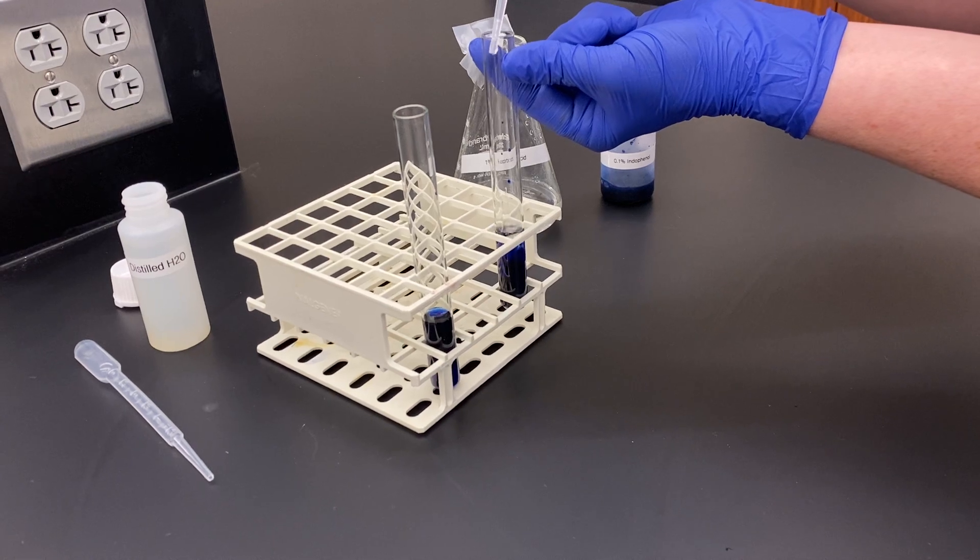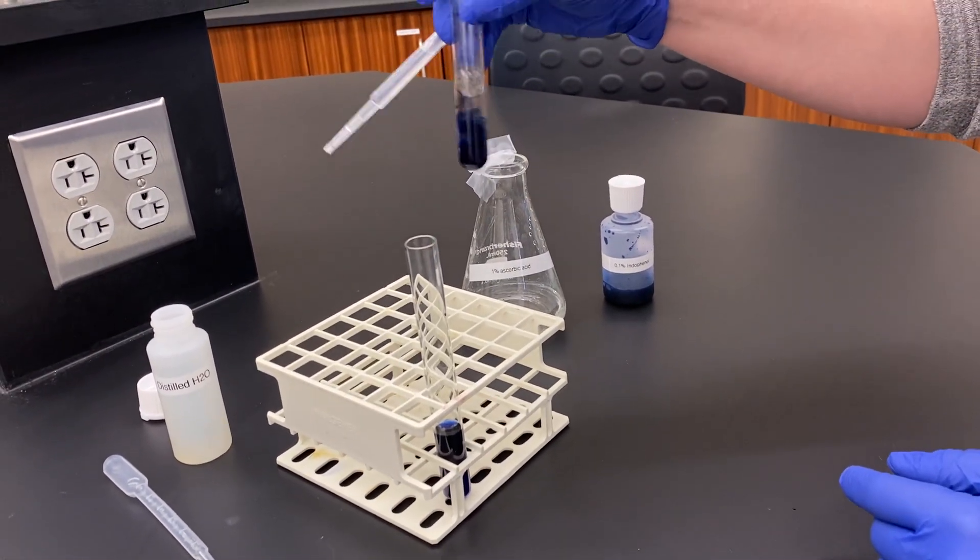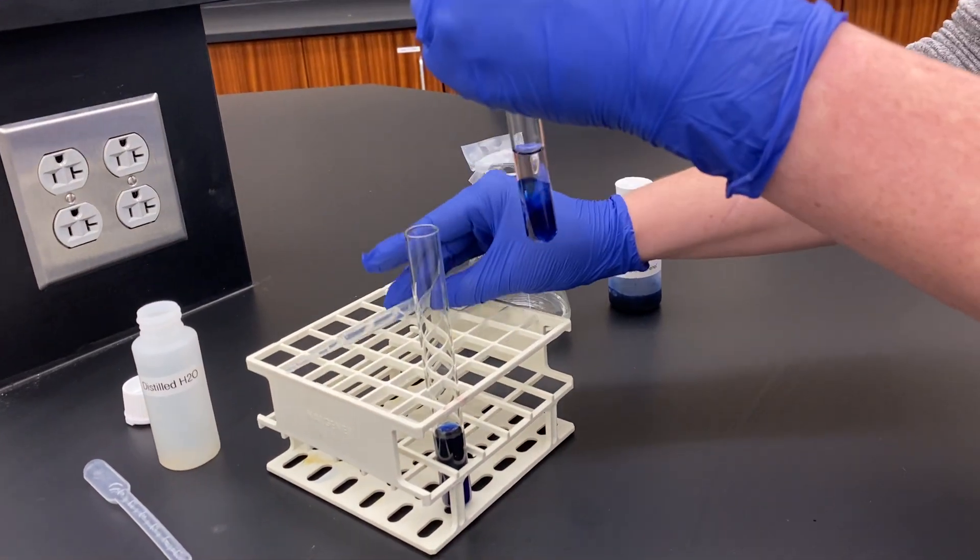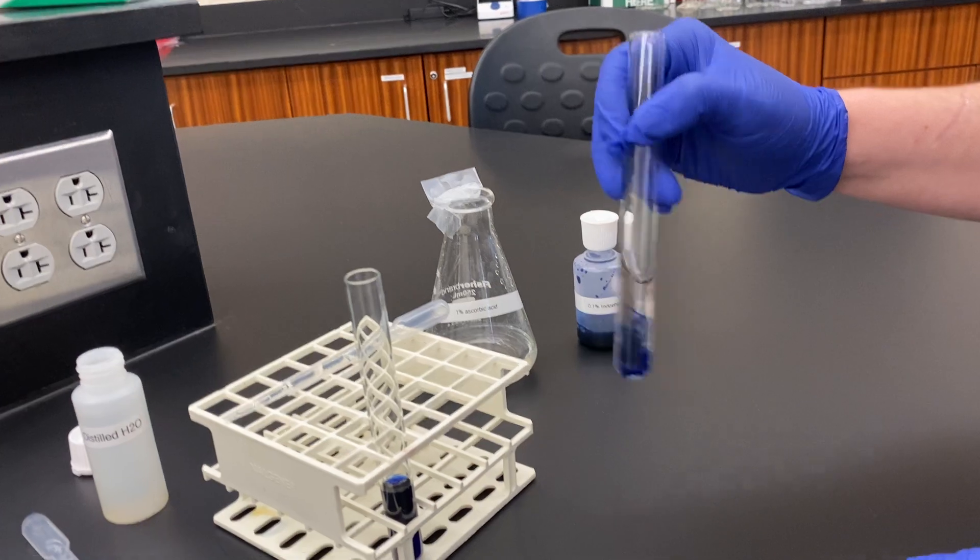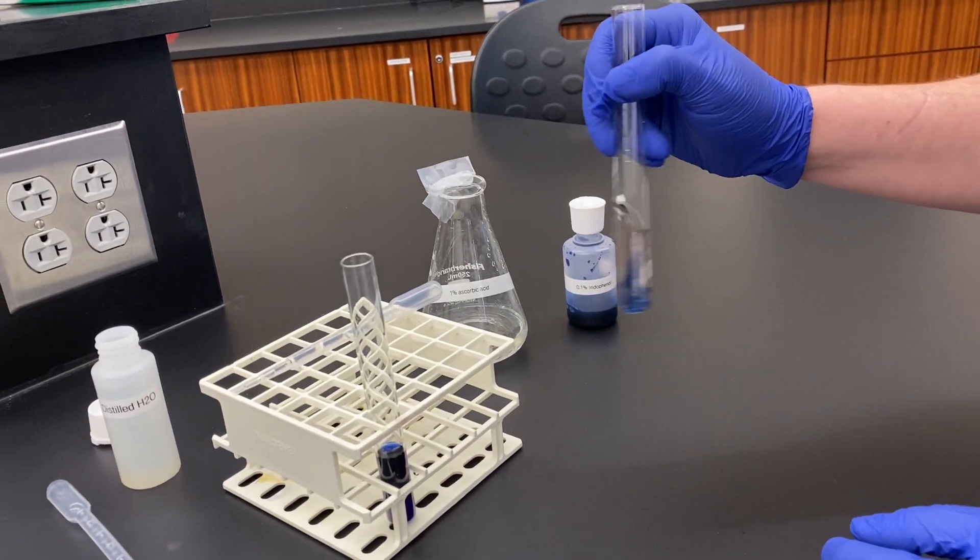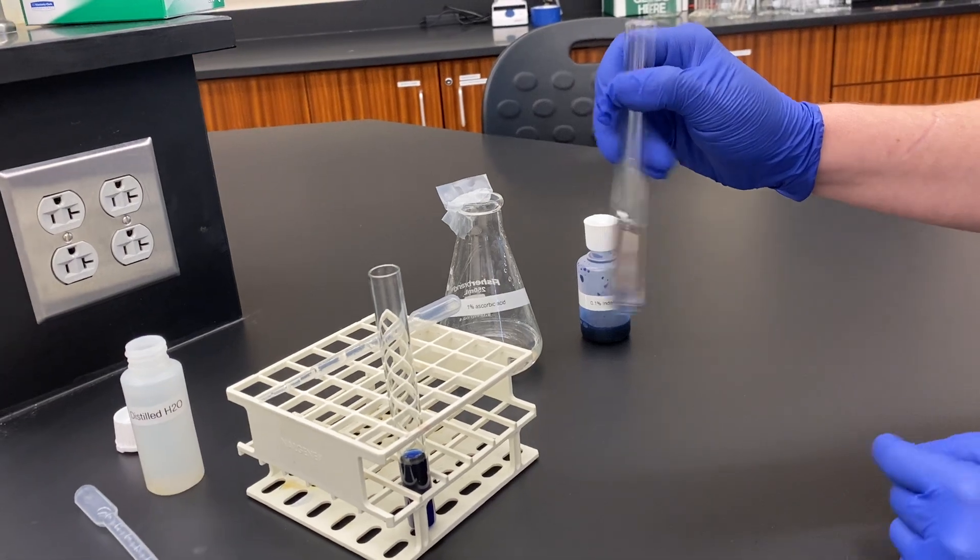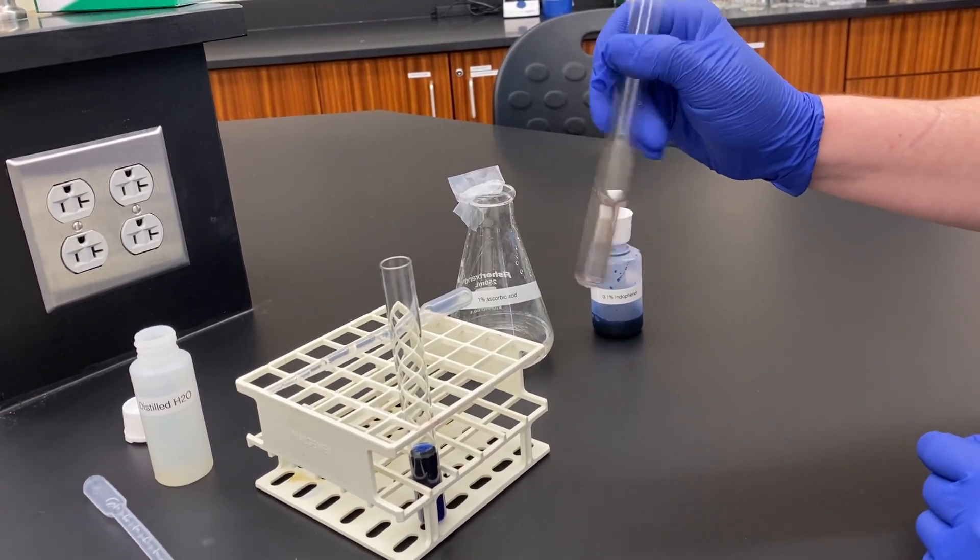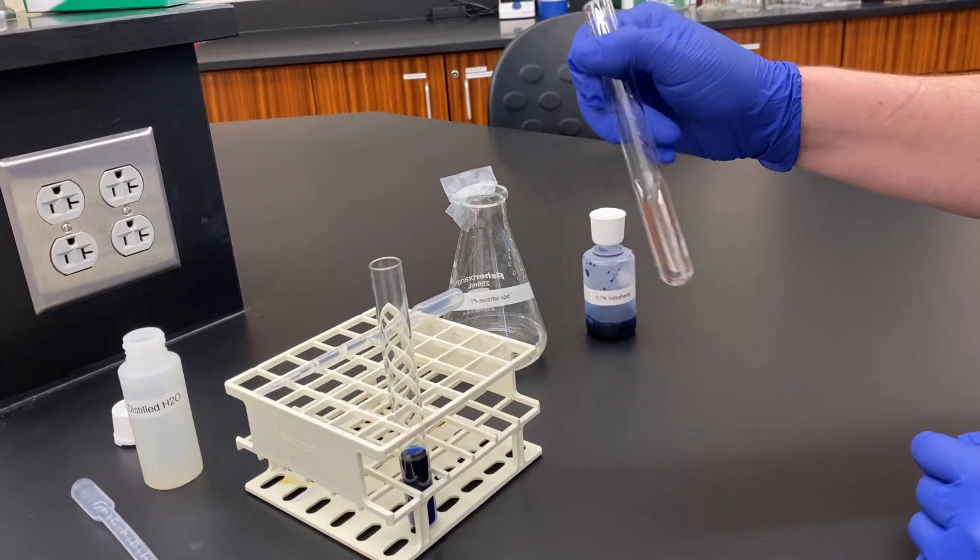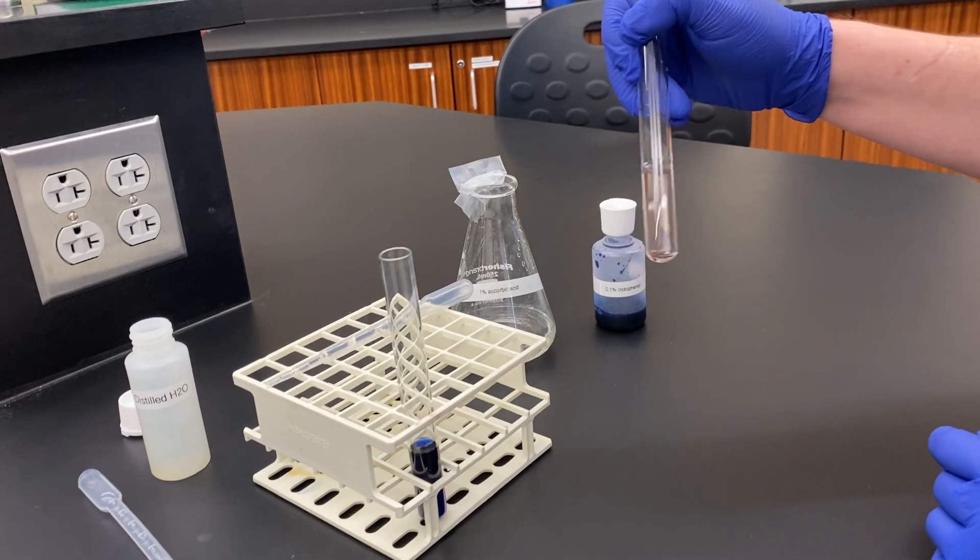I'm going to start to just swirl it, and you can see as I swirl and interact more of that vitamin C, I start to have a decoloration of the solution. As I continue to shake, that endophenol is being reduced by the vitamin C. Adding about a milliliter of vitamin C was enough to fully reduce the endophenol in this solution.